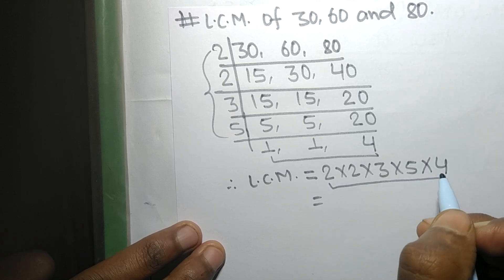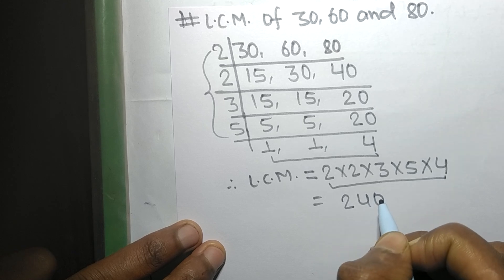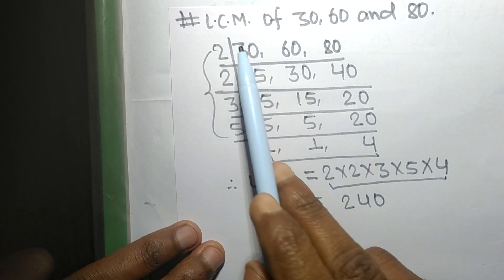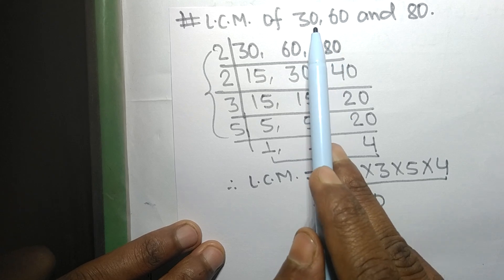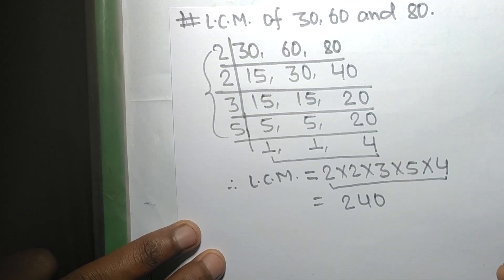So by multiplying all these numbers we get 240. So 240 is the LCM of 30, 60, and 80. So this much for today and thanks for watching.